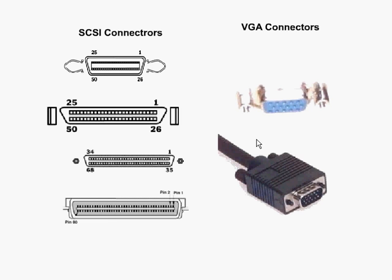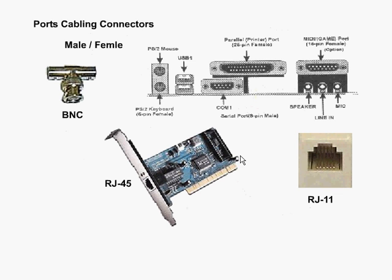SCSI can also be internal or external depending on the device you've chosen to install. To the right of the SCSI connectors, we have the VGA connectors — a male and a female VGA connector. You would use this generally for a monitor, plug it into the back of your computer, tighten the screws, and that connects into usually a video card. Token Ring is very similar to Ethernet, although it uses a different kind of technology. Depending on the card, some have a BNC connection. We've also got your regular speaker, inline, and mic jacks for connecting speakers and a microphone.